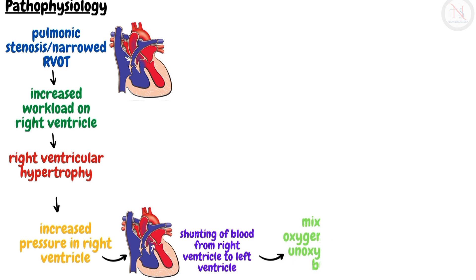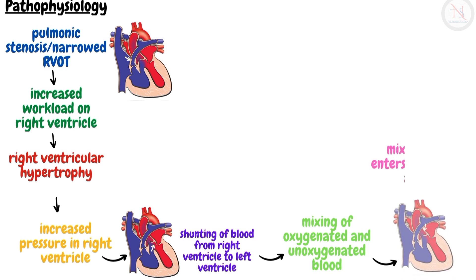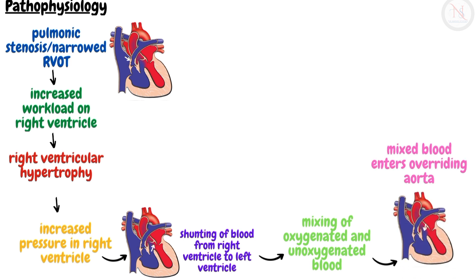Due to this, unoxygenated blood and oxygenated blood mix together. Since blood flow to the lungs is restricted due to pulmonary stenosis, the maximum volume of mixed blood enters the overriding aorta and reaches the systemic circulation, causing cyanosis — bluish discoloration of the mucous membranes, nail beds, and skin.